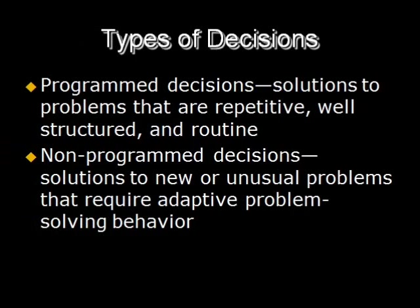Program decisions are solutions to repetitive and routine problems provided by existing policies, procedures, and rules. These types of decisions can be readily delegated to subordinates. Non-program decisions, however, require solutions to unique problems that require judgment, intuition, and creativity. Approximately one half of management decisions go wrong. Some of the reasons include poor problem definition, choosing quick-fix solutions, and limiting participation in decision-making. To improve the odds of success, supervisors should personally manage the decision-making process, establish clear objectives while searching for new ideas, and manage roadblock intervention.